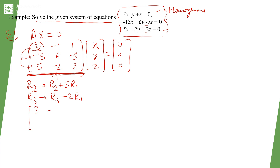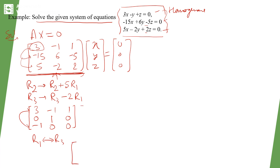After the row operations, row 1 remains [3, -1, 1]. Row 2 becomes [0, 1, 0] and row 3 becomes [0, 0, -1]. To convert to upper triangular (echelon) form, we interchange rows. After the interchange, writing with unknowns x, y, z, the matrix becomes [-1, 0, 0; 0, 1, 0; 3, -1, 1].